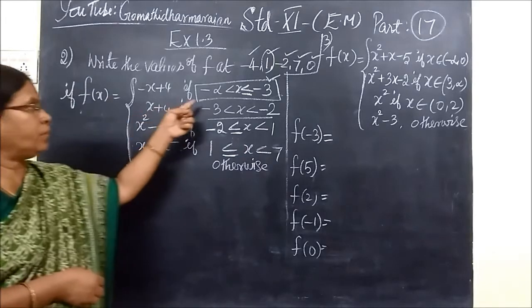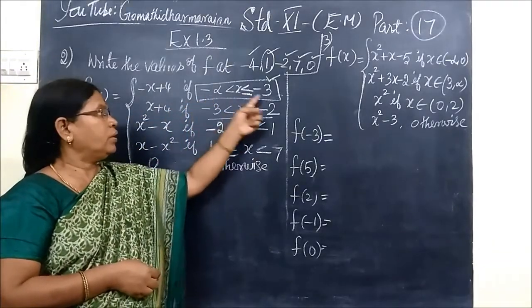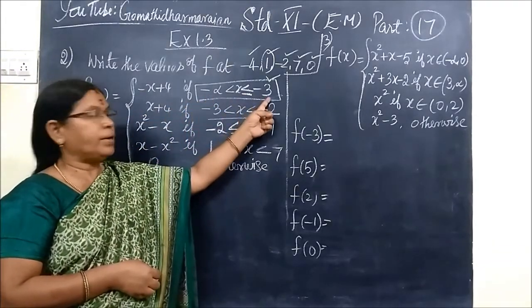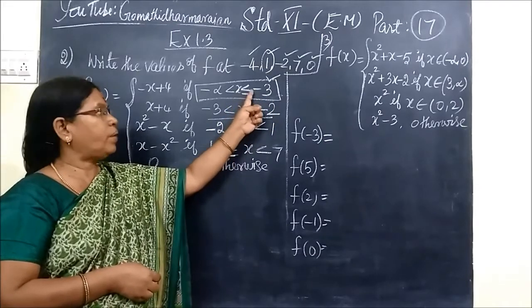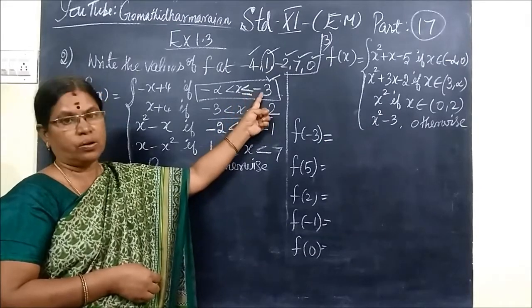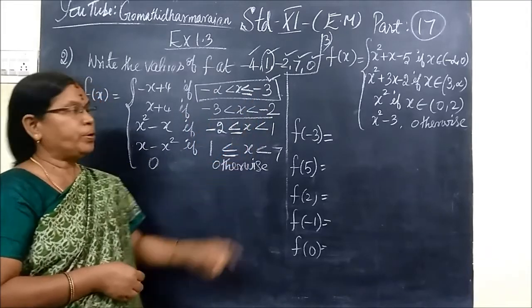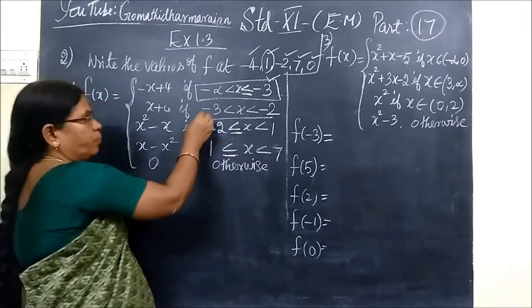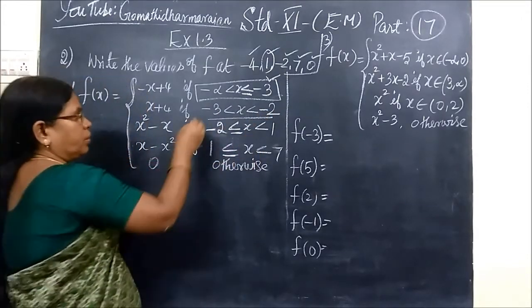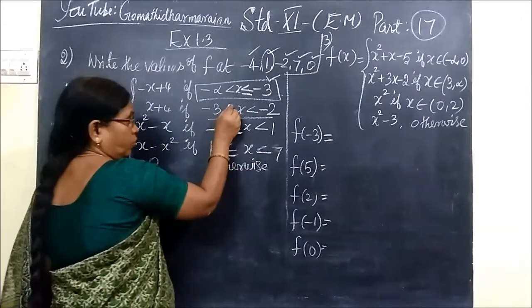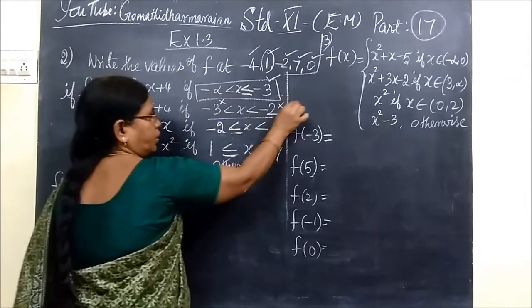Here the intervals are given. The intervals are minus infinity to minus 3. The equal to sign means minus 3 is also included. Then here no equal to sign, so between minus 3 and minus 2 you are considering the number. If you get no equal sign, so minus 3 and minus 2 are excluded.